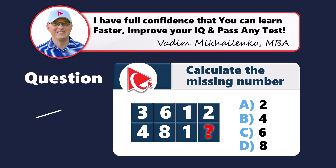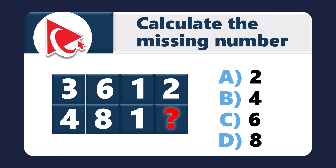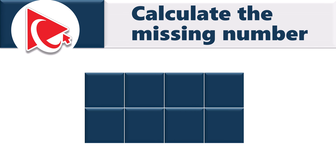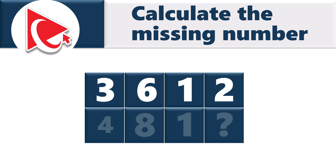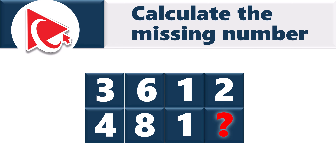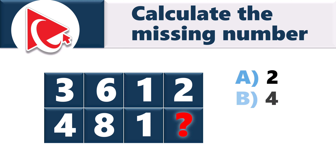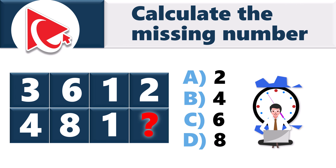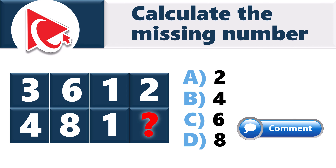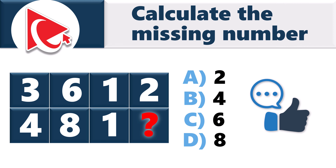Get ready for a mental challenge. You're presented with a 4×2 matrix with 7 numbers — calculate the 8th. First row: 3, 6, 1, 2. Second row: 4, 8, 1, and the missing number. Select from: Choice A, 2; Choice B, 4; Choice C, 6; Choice D, 8. Take a close look and post your answer in comments so I can give you my feedback. Good luck solving this challenge.